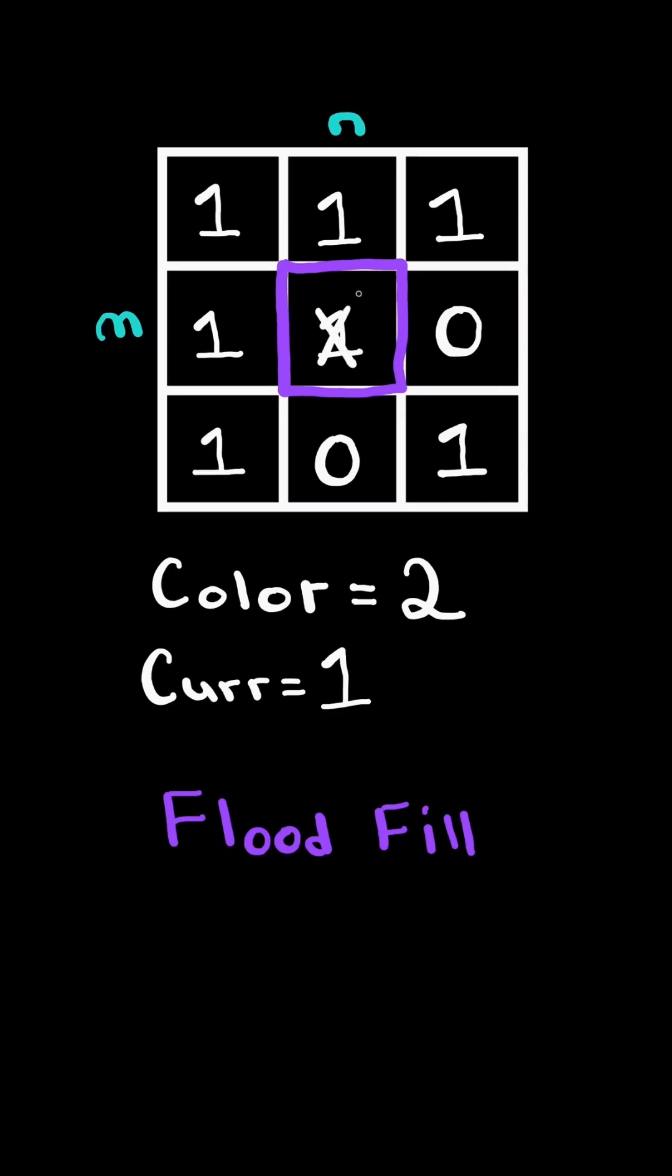We update our current color to the new color and we go and check all adjacent pixels. We only consider pixels that have the same value as the current pixel 1 and we repeat the process with those new pixels.